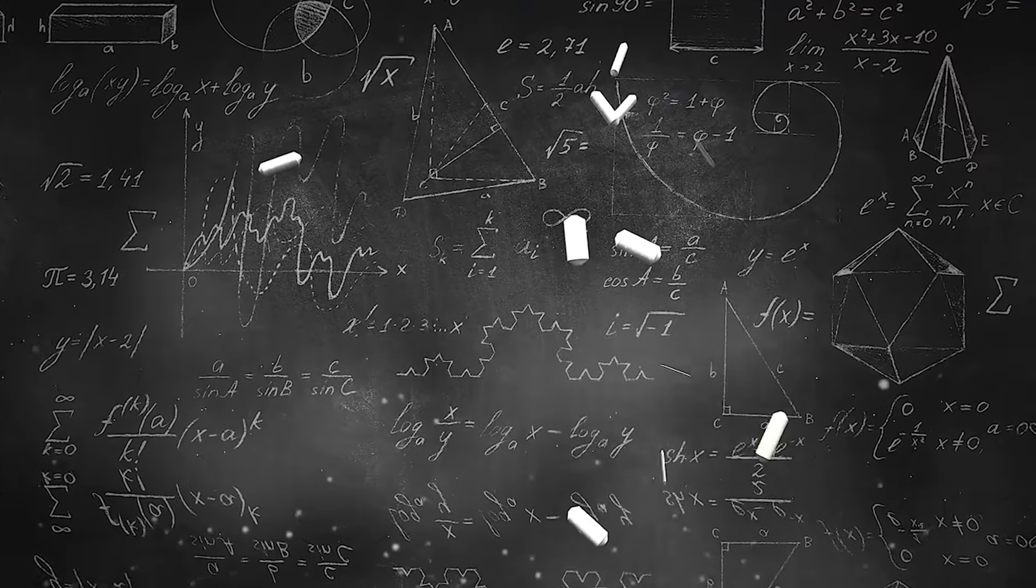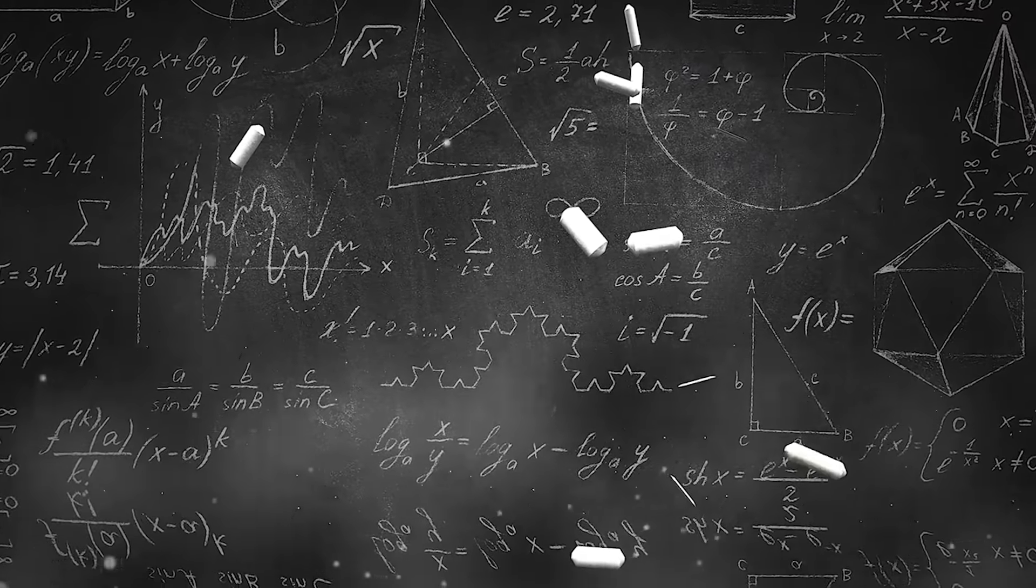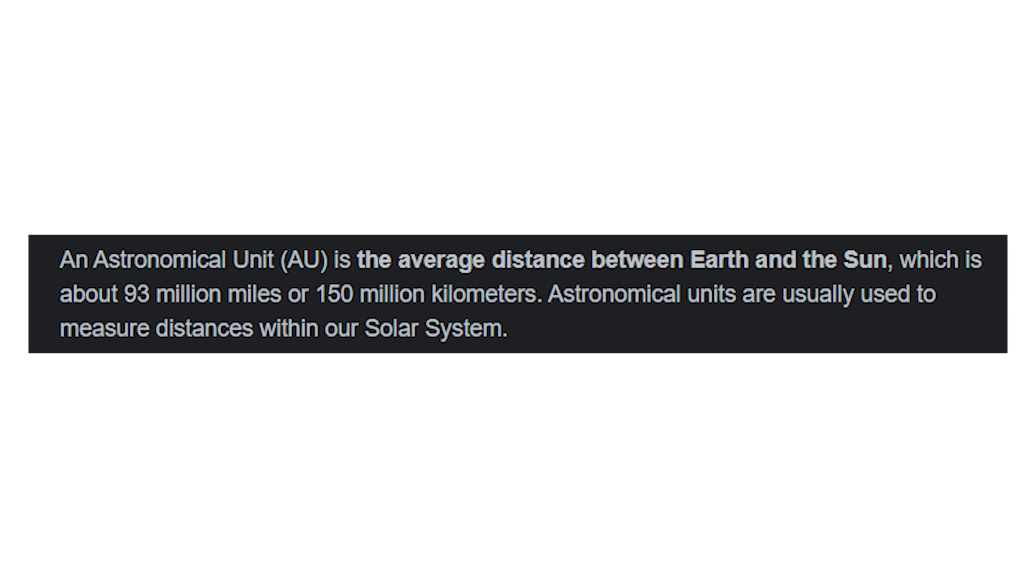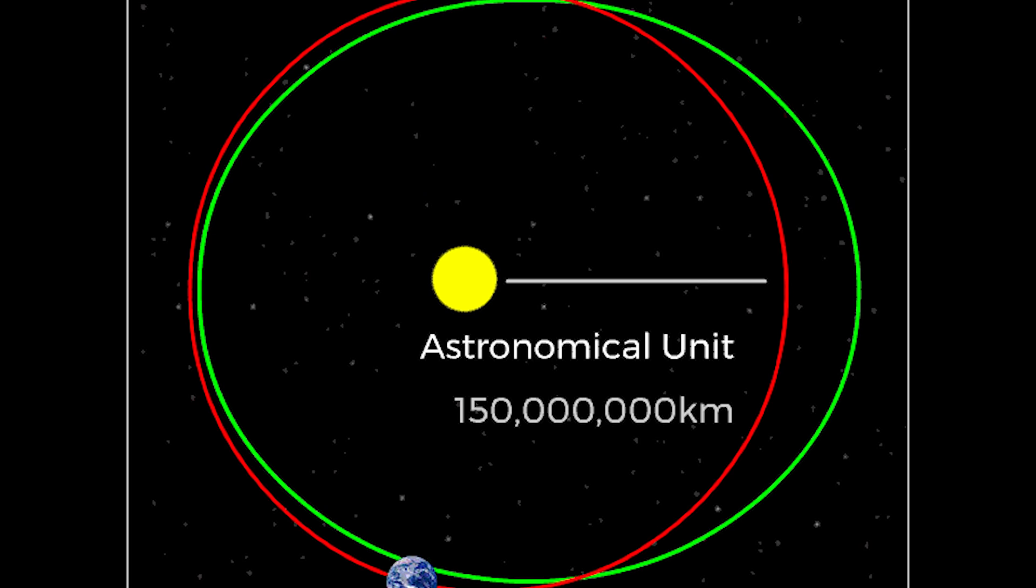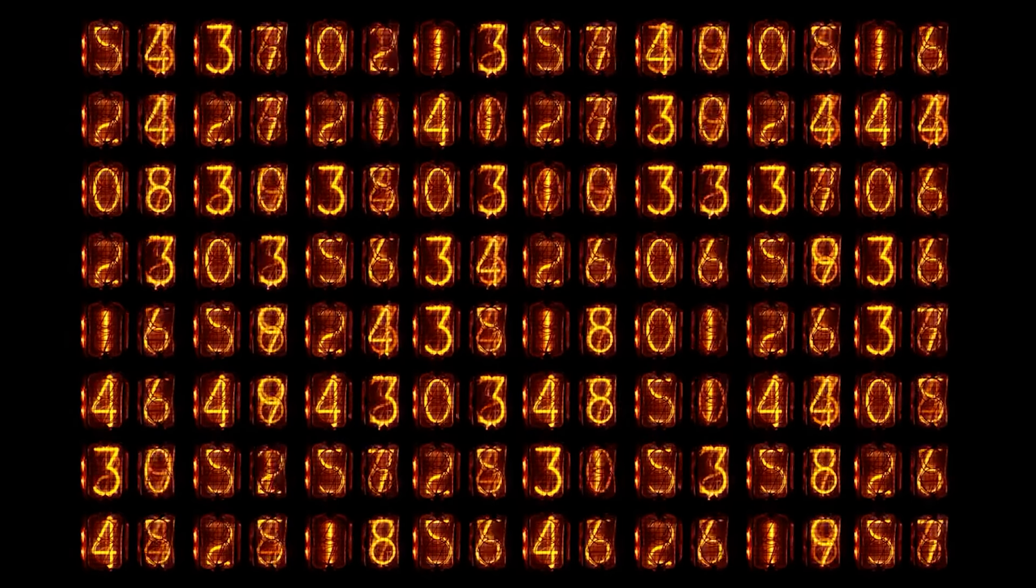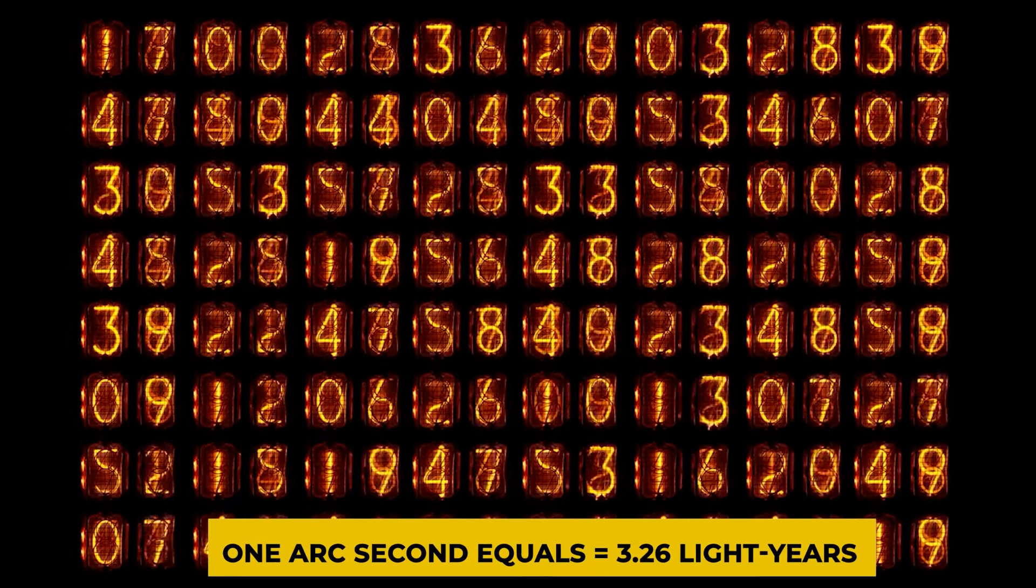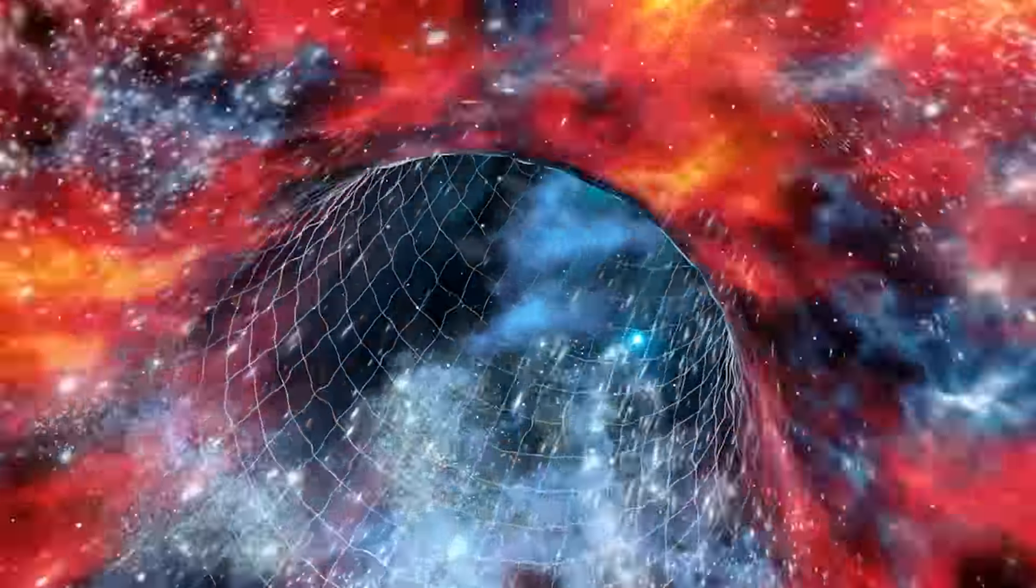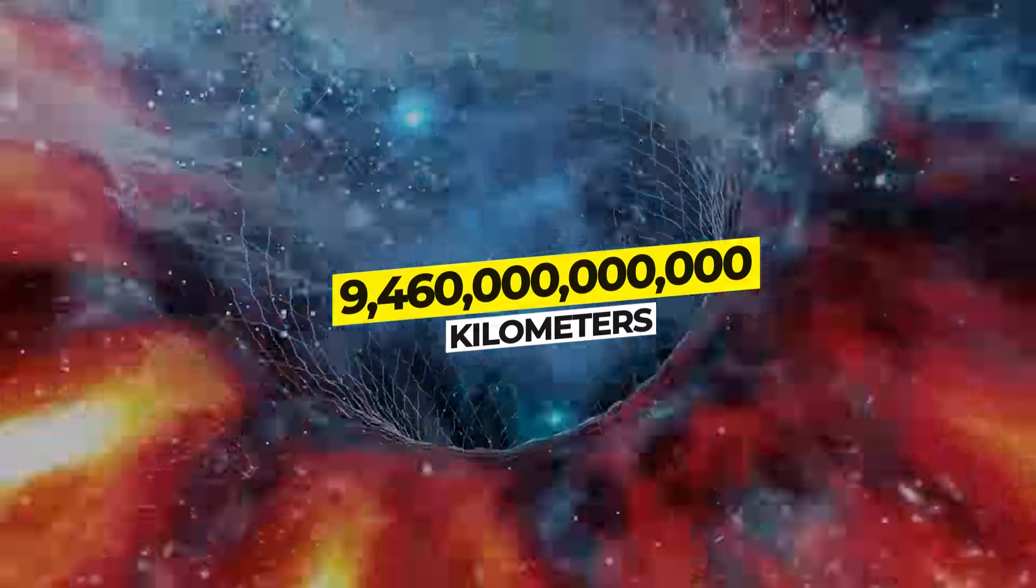To comprehend how a parsec is defined, it is necessary to understand what an astronomical unit is. One AU is roughly equal to the average distance between the Sun and the Earth, approximately 150 million kilometers in the space between them. As a result, a parsec is defined as the longest length of a triangle whose shortest side is one AU and subtends an angle of one arc second at the opposite vertex. If you continue your calculations, you will see that one arc second equals 3.26 light years or the distance that light travels in one year, which is approximately 9 quadrillion 460 trillion kilometers.